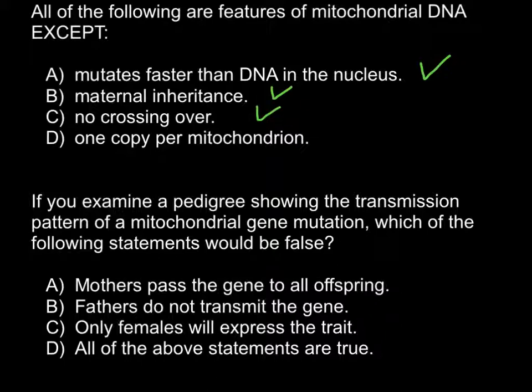The incorrect statement would be: one copy per mitochondria — and this is not true, because per one mitochondria you may find tens, hundreds, and sometimes even thousands of copies of the circular DNA. So this would be the incorrect statement, and our question asks us to find the incorrect statement, so the answer is D.